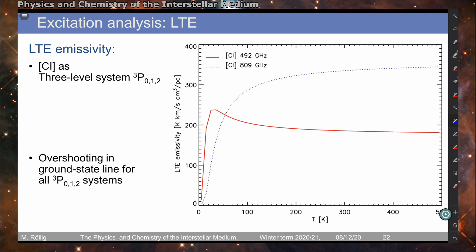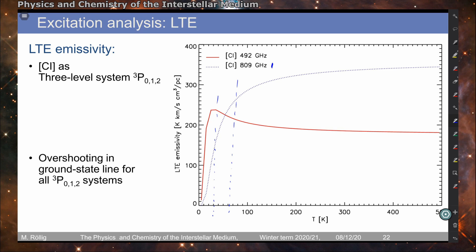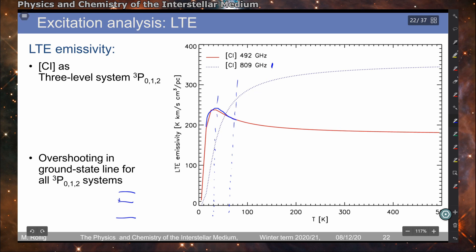For a three-level system this is somewhat more complicated. The upper transition shows similar behavior: above roughly 60 K (the energy of the upper transition), the emissivity is constant. For the lower transition (~30 K energy), because this is a three-level system, there is a slight overshooting behavior before the emissivity becomes approximately constant — this is the overshooting in the ground state line. In the three-level system, the ground state population can become overpopulated relative to LTE because it is populated from both the lower and upper states and cannot depopulate fast enough.